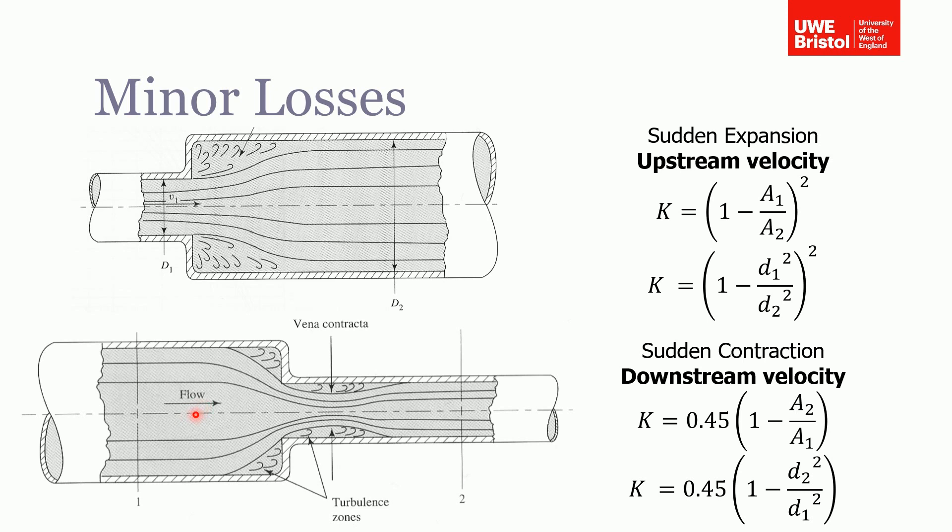Where you have a sudden contraction, going from a larger diameter to a smaller diameter, then it's given by this function. Again, this loss coefficient is a function of the ratio of the areas, and note this is based on the downstream velocity.